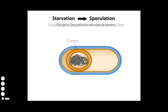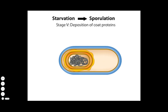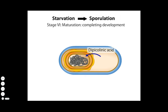In stage 5, layers of coat proteins are deposited on the outer membrane. Stage 6 completes the development of spore resistance to heat and chemical insults. This last stage includes the synthesis of dipicolinic acid in the mother cell and its uptake into the core of the spore. Dipicolinic acid is important in maintaining dormancy and in promoting spore dehydration, a characteristic that makes the spore heat-resistant.